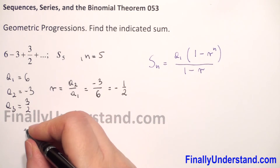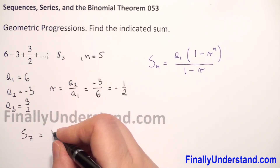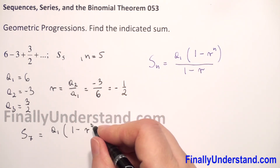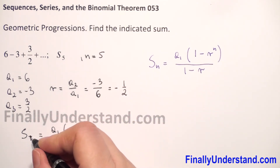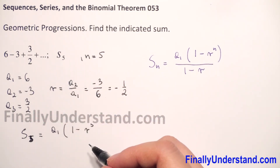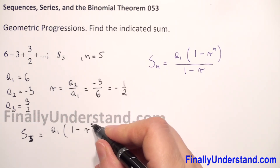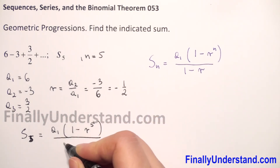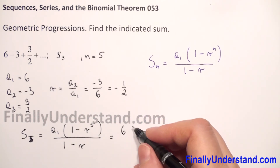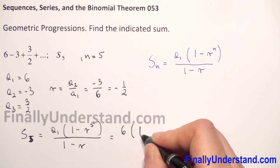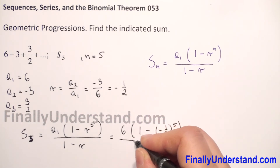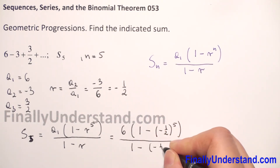Now we have R and A1, so we can substitute into our formula. S5 equals A1 times (1 minus R to the power 5) over (1 minus R). Substituting: 6 times (1 minus (negative 1 half) to the 5th power) over (1 minus negative 1 half).